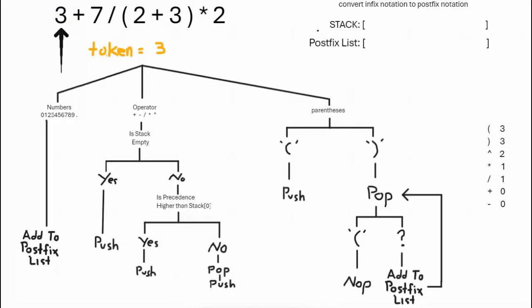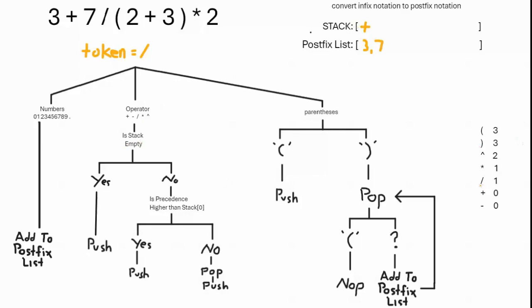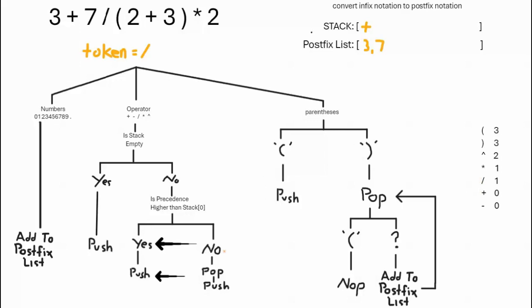Let's begin problem three. We take three, assign it to token, test the token type — it's a number, so we add it to the postfix list. The next token is plus — it's an operator, the stack is empty, so push it. Next, seven — it's a number, add it to the postfix list. The next token is the division symbol. It's an operator, the stack is not empty, and division has higher precedence than addition, so push the division operator to the stack.